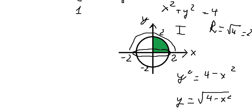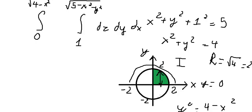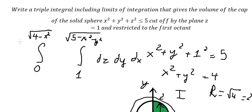The lower bound is the straight line y equal to zero, because we concentrate only on this area. So dy goes from zero to the square root of four minus x squared. For dx, looking at the graph we go from zero to two, since we are only in the first octant. That is the final answer for the triple integral bounds.